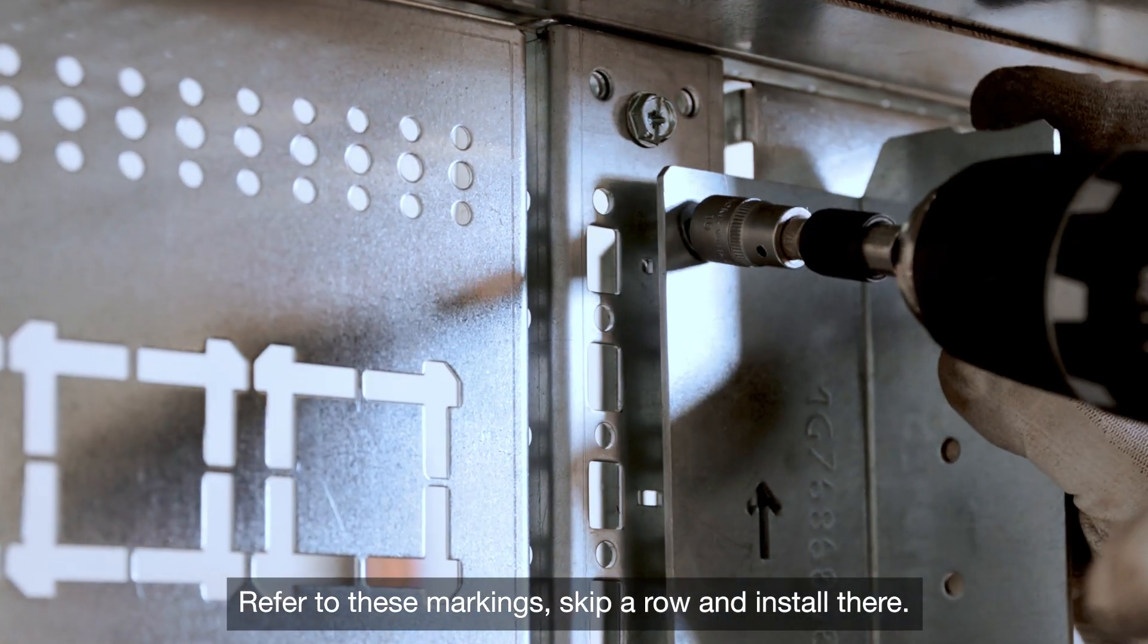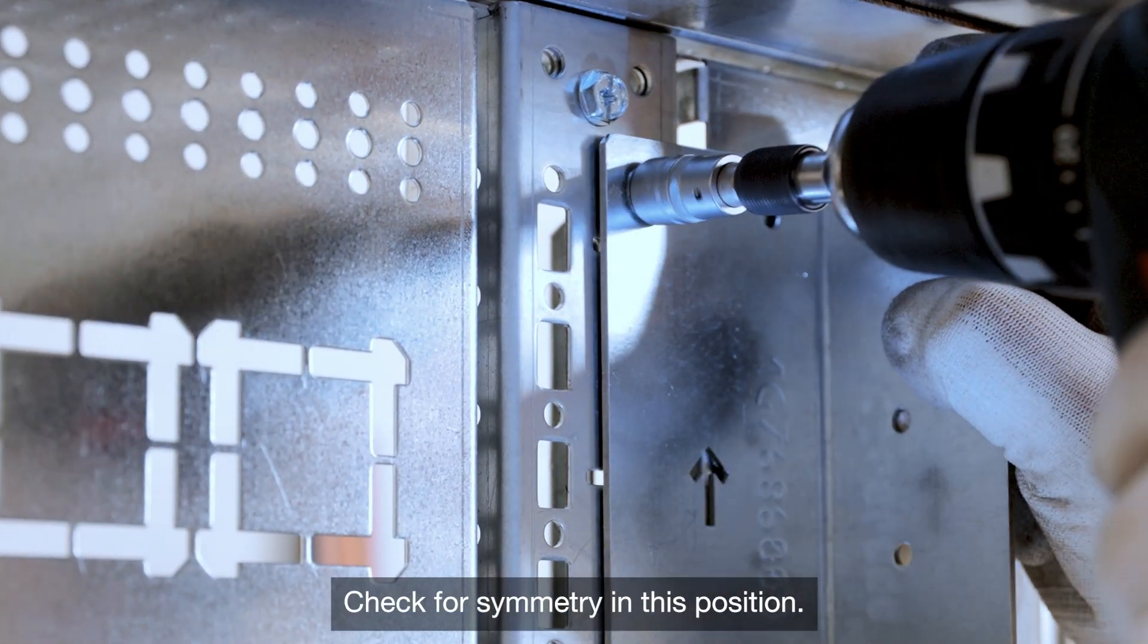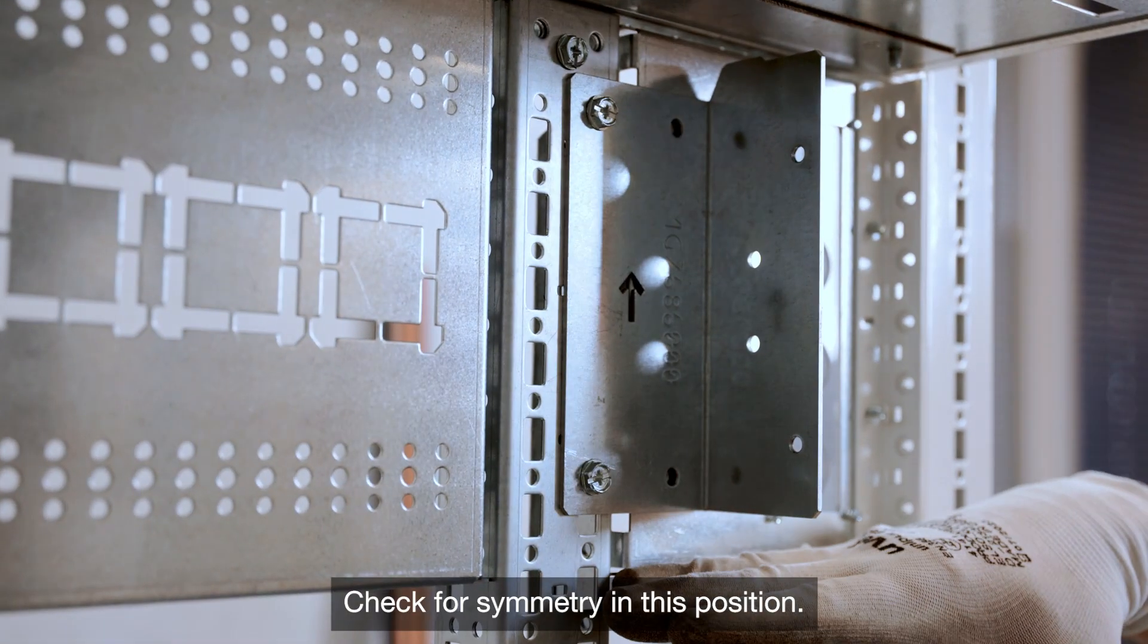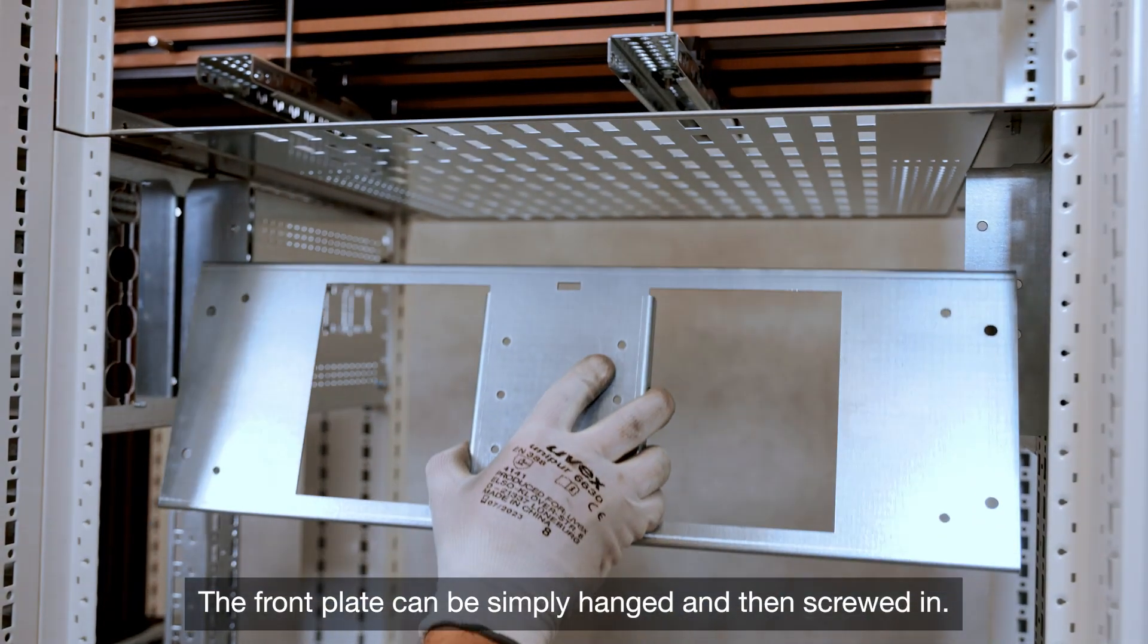Refer to these markings, skip a row and install there. Check for symmetry in this position. The front plate can be simply hanged and then screwed in.